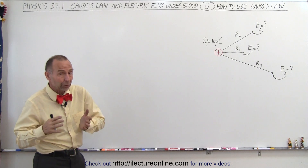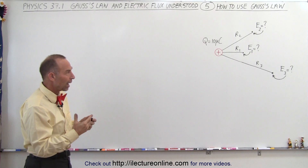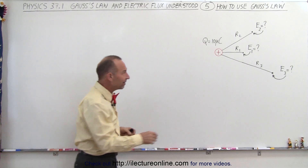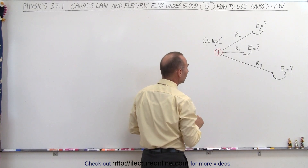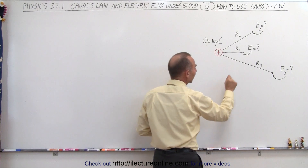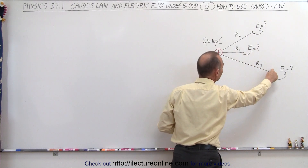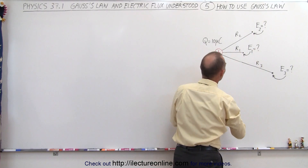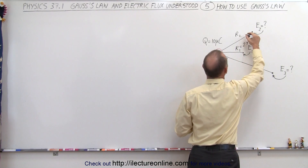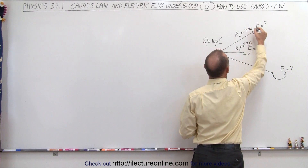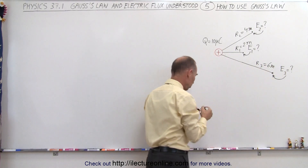You may wonder why we even use Gauss's law for this — we don't really have to, but it's a good way to show how it's used. Let's say that we have a point charge of 10 microcoulombs, and we want to know the electric field at three different locations: R1 at a distance of 2 meters, R2 at a distance of 4 meters, and R3 at a distance of 6 meters away from the point charge.